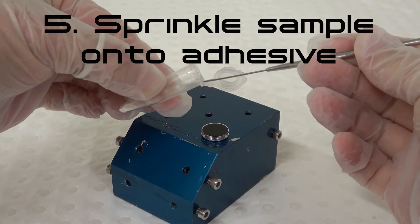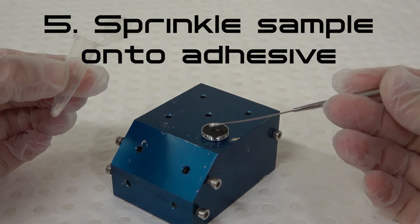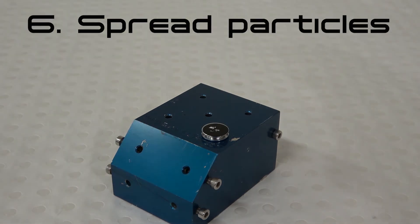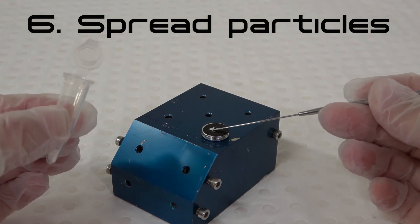Step 5. Using a clean small spatula, sprinkle a very small amount of the powdered sample onto the adhesive. Step 6. Gently spread the particles across the adhesive using the back of the spatula.